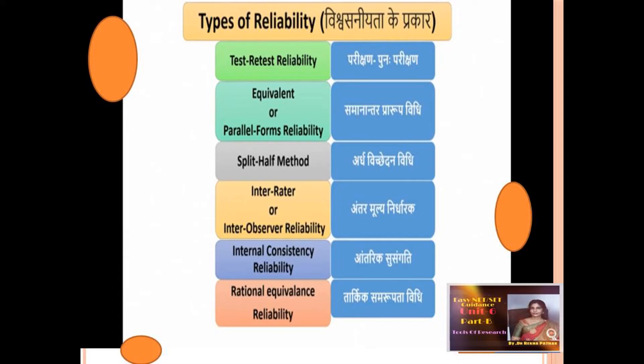The next type is the split-half method. The most widely used procedure for estimating reliability from a single testing is the split-half method. The test is divided into two halves as equivalent in difficulty and in content. For each individual, two scores of these two halves are obtained. Correlation between the halves is determined and is taken as a measure of the accuracy of the test.